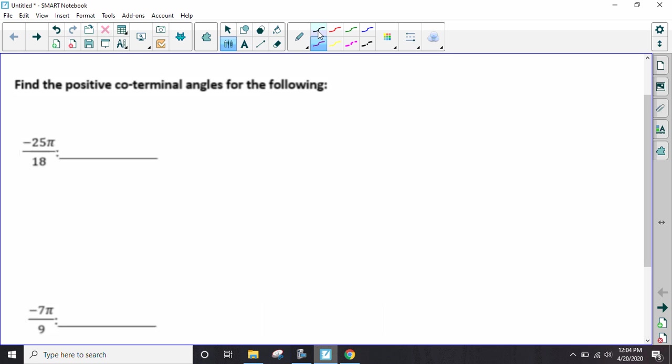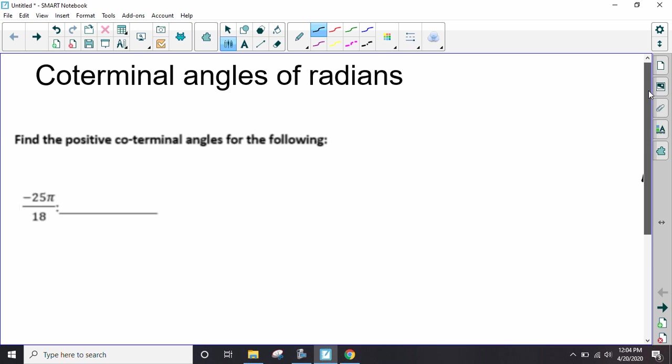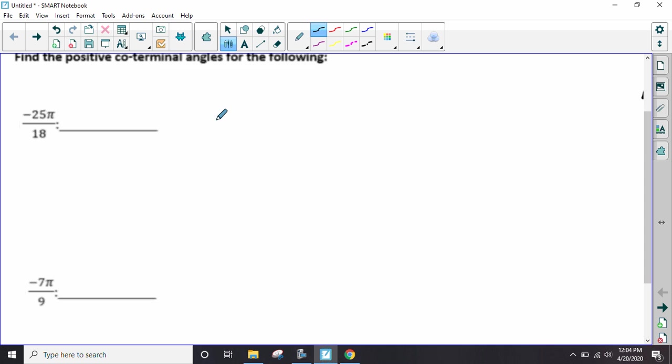All right. Now, this is the part that students have a hard time in a regular classroom, not just doing this e-learning thing thanks to COVID-19, but it's coterminal angles of radians. Normally, like last time, we would add 360 degrees because it was in degrees. This time it's in radians, so we would have our normal thing right here and then we would add 2π because that's what it is in radians. Now this is where people get confused.